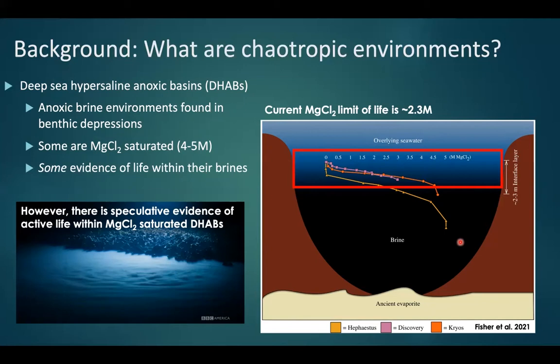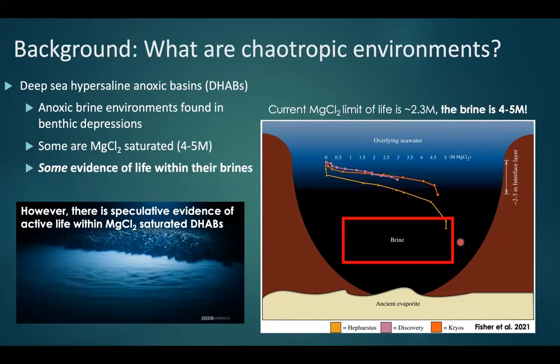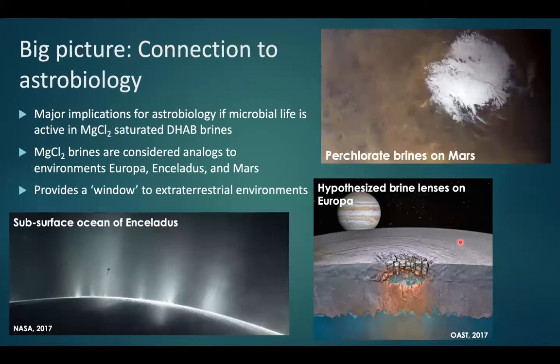Some studies go as far as to say the limit is around three molar in some of these DHABs, whereas the brine itself is four to five molar magnesium chloride — significantly more stressful. We're interested in magnesium chloride DHABs because they share similarities with hypothesized brine lenses on Europa, perchlorate brines on Mars, and subsurface oceans of Enceladus, giving us a window into extraterrestrial brines.